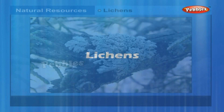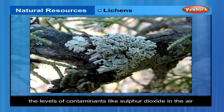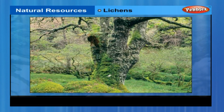Organisms called lichens are found to be very sensitive to the levels of contaminants like sulfur dioxide in the air. Lichens can be commonly found growing on the barks of trees as a thin, greenish-white crust.